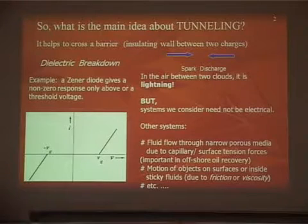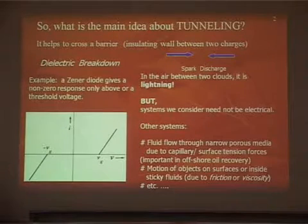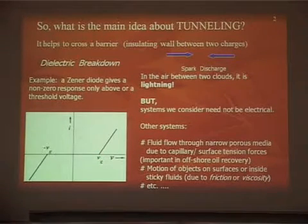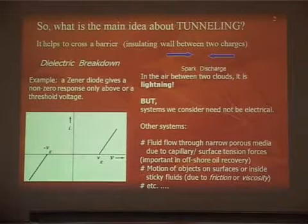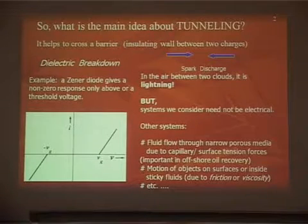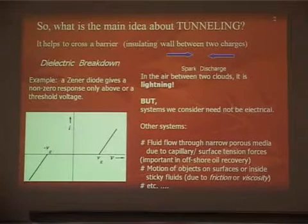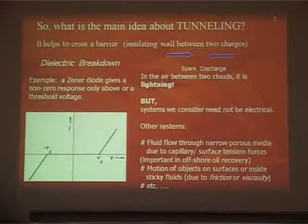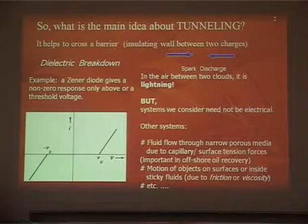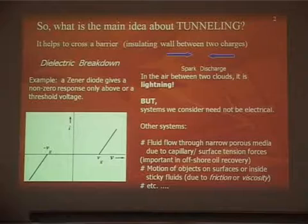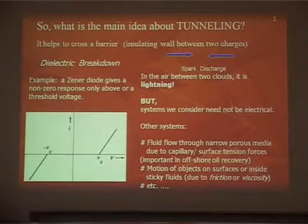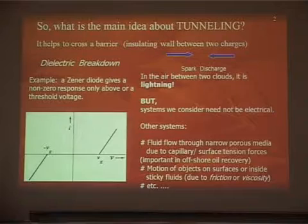This behaves well for the percolation problem and gives results in many similar cases. For example, friction in mechanical systems also has a threshold. The friction coefficient is low until the object moves, then you have the dynamic friction coefficient, which is smaller. If we look at conductance analogously, it shows similar behavior — also relevant for porous pathways and microtubules.